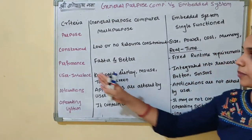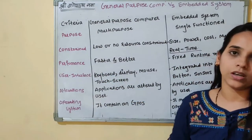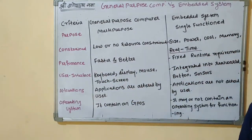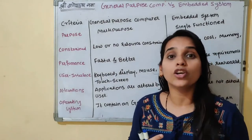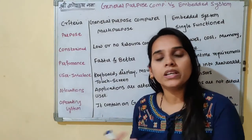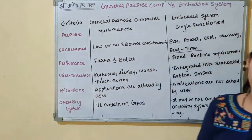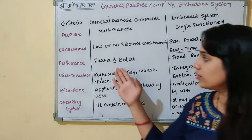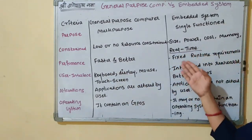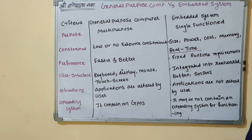Next comes performance. General Purpose Computers are faster and better because they contain multi-core processors and perform multiple tasks. Whereas embedded systems have fixed run-time requirements.